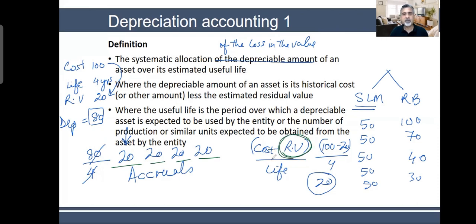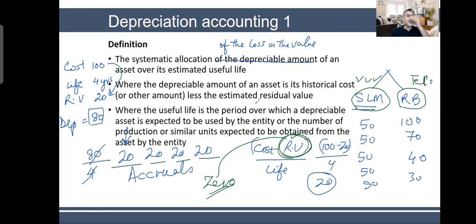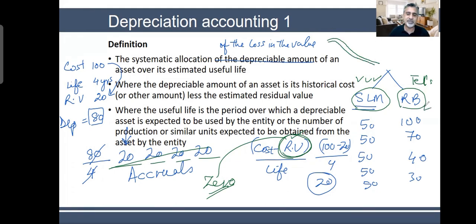Always remember: if the question does not tell you which method to use, always use straight-line. Only use reducing balance if the question specifically states to use it. Use straight-line for assets that bring equal benefit each year. Use reducing balance for assets where the benefit decreases as the asset gets older.